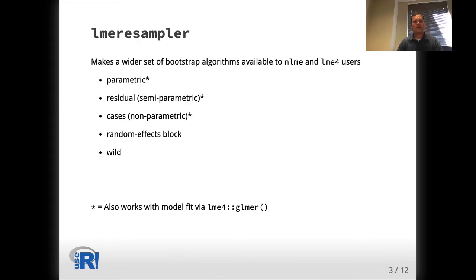LME resampler provides users with easy access to a larger set of bootstrap procedures. Currently, it implements five procedures for Gaussian response models, including the parametric, residual, cases, random effects block, and wild bootstraps. The parametric, residual, and cases bootstraps are also available for generalized models with non-Gaussian responses that are fit via GLMER.